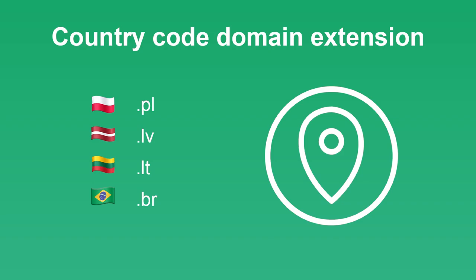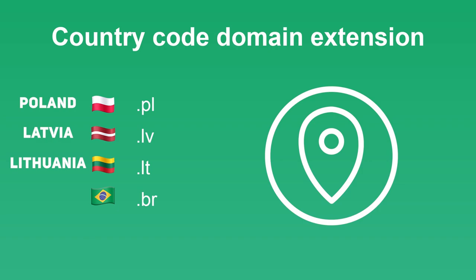For example, if your website targets Polish people in Polish, choose .pl; for Latvians, .lv; for Lithuanians, .lt. If you're building for a global or English-speaking audience, always choose .com. For a particular country and language, choose the country-code extension. Let's now talk about tips when choosing a domain name.